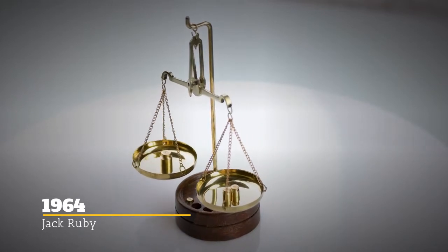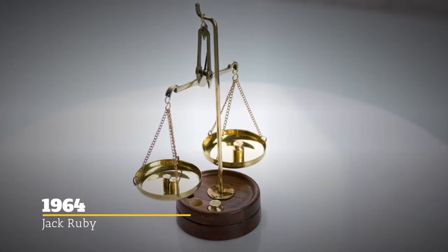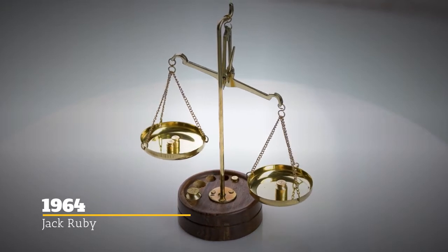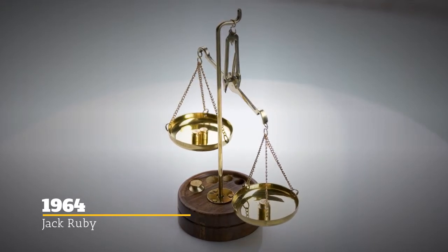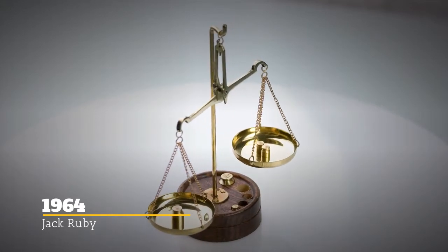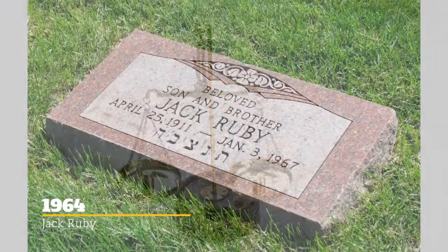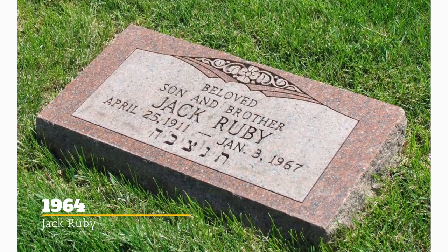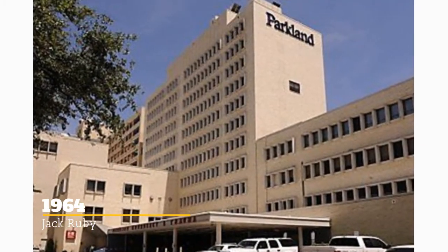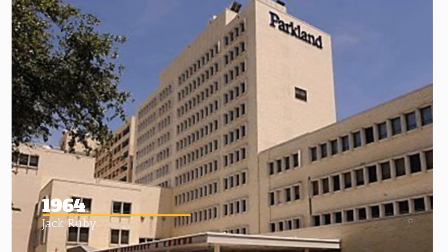In October of 1966, the Texas Court of Appeals reversed the decision on the grounds of improper testimony and also the idea that there was no way Jack Ruby could have gotten a fair trial in Dallas at the time. Jack Ruby never made it to that second trial, though, because he died of a lung cancer complication in January of 1967. Interestingly, he died at Parkland Hospital — the very same facility where Oswald died and where Kennedy had been pronounced dead.